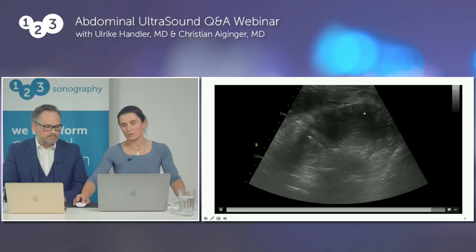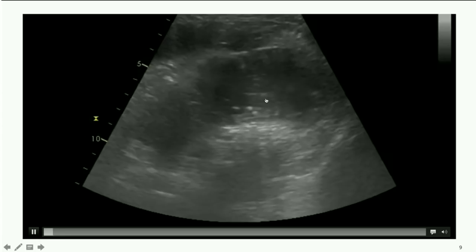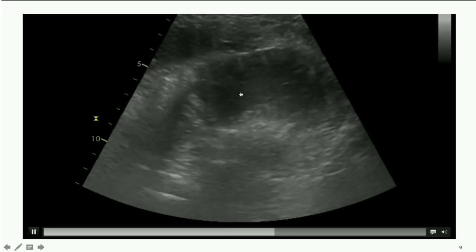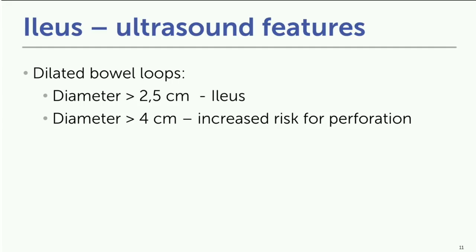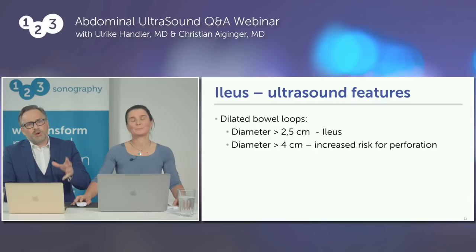Remember the cutoff point is 2.5 centimeters, and here we see altered peristalsis with bowel loops well over four centimeters. If the diameter exceeds four centimeters, the risk for perforation is quite high, so we should always measure the diameter of the bowel loops.